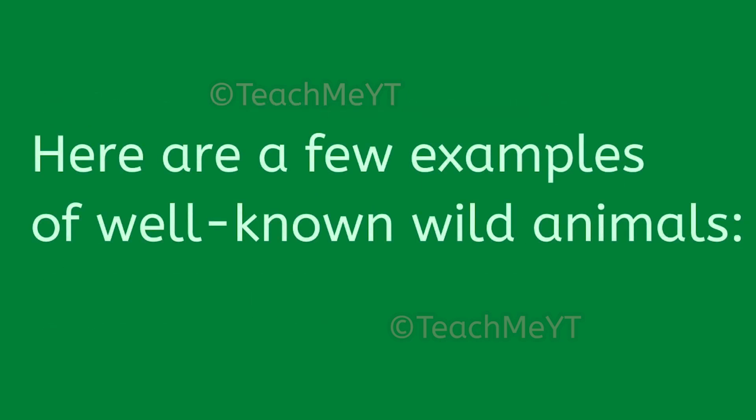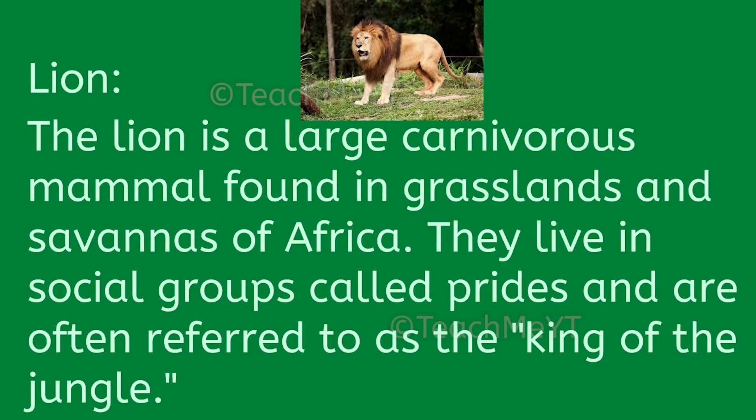Here are a few examples of well-known wild animals. Lion: The lion is a large carnivorous mammal found in grasslands and savannas of Africa. They live in social groups called prides and are often referred to as the king of the jungle.